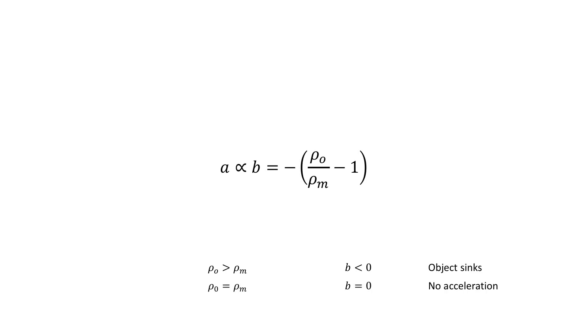When the two are equal, b is equal to zero, which makes sense. There is no acceleration, and the object just hovers. When the object is less dense, after we have put that minus sign in there, we can see that b is positive, so the acceleration is upwards. So that's our first test, and it seems to work with what we know from observations.